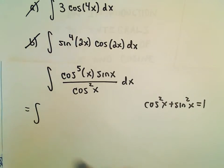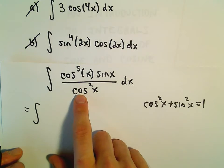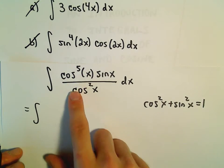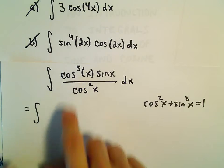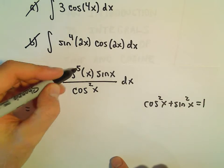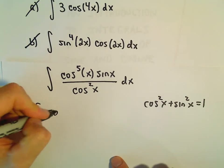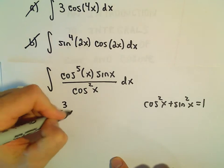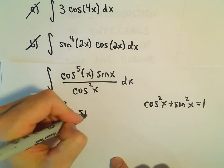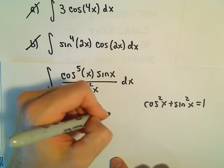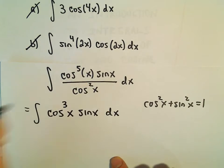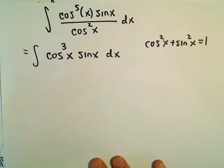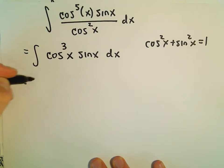We've got cosine squared on the bottom and cosine to the fifth on top. If we reduce that, cosine to the fifth over cosine squared would be cosine to the third power of x times sine x dx. And now here I think a u-substitution will make things work out nicely.